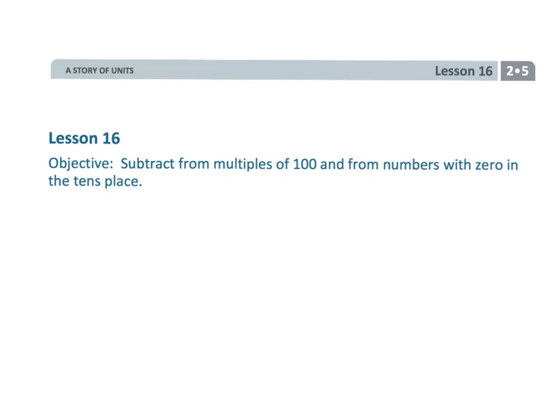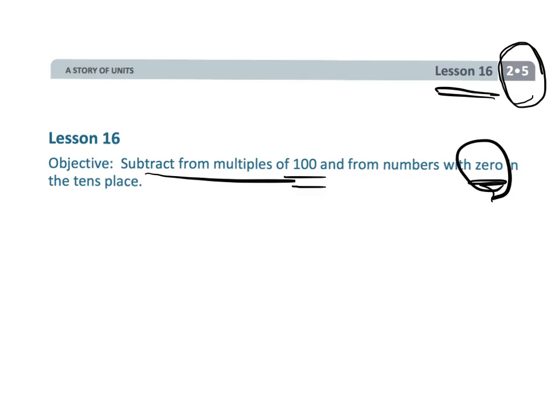This is second grade module 5 lesson 16. We're going to continue subtracting using the standard algorithm, but now we're going to be subtracting from multiples of 100 and from numbers with zeros in the tens place. The problems still involve subtraction and the standard algorithm, but they're a little more complicated because we're throwing in zeros, which are always kind of problematic.